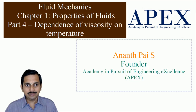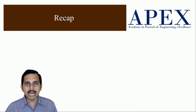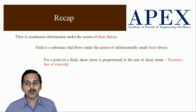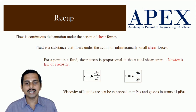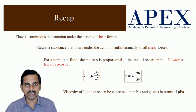We are now in chapter 1, properties of fluids, and we are going to go with part 4, which is dependence of viscosity on temperature. Let us have a recap of what we have done till now. We had seen what is flow, what is a fluid, what is Newton's law of viscosity, and then we had expressed the viscosity of liquids in terms of millipascal seconds or centipoints and gases in terms of micropascal seconds.